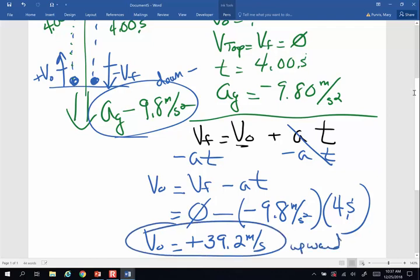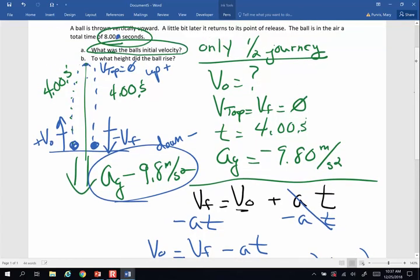Now the second part of the problem says this. It says, to what height did the ball rise? Well to answer this question, there's a couple different ways about it. I am going to use, again, only one half of the journey. I'm going to go from here to the tippy top, because I'm interested in the displacement x. If I use the whole journey, if I use the whole path, here's what's going to happen. I take the ball, I throw it up, it comes back down, and if I do that, what's my displacement from here to there?